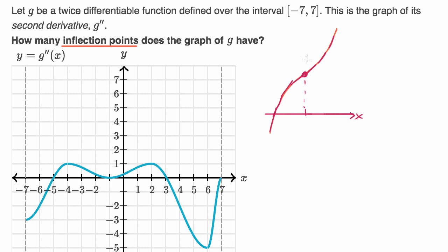You could go the other way around — you could have a function where we have a negative slope, but the slope is increasing, and then our slope begins decreasing again. This too would be an inflection point.